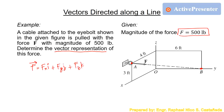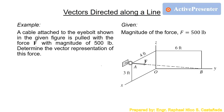By inspection, you can determine the directions of the components. The X component has a negative value because the force goes backward from point A to point B. The Y component is going to the right, so that is positive. The Z component is going downward because point A is above point B, so FZ is negative.